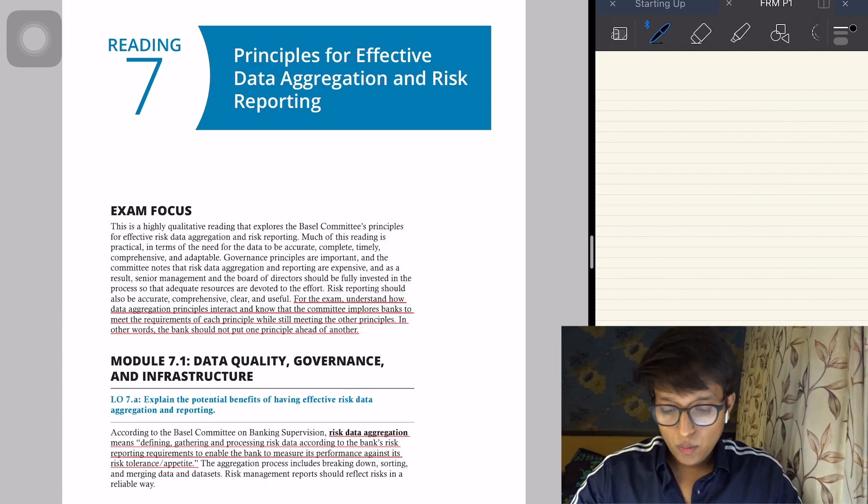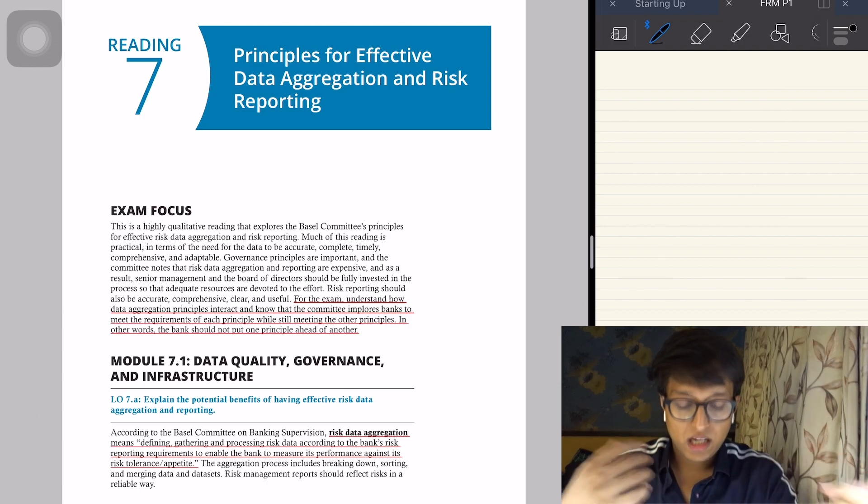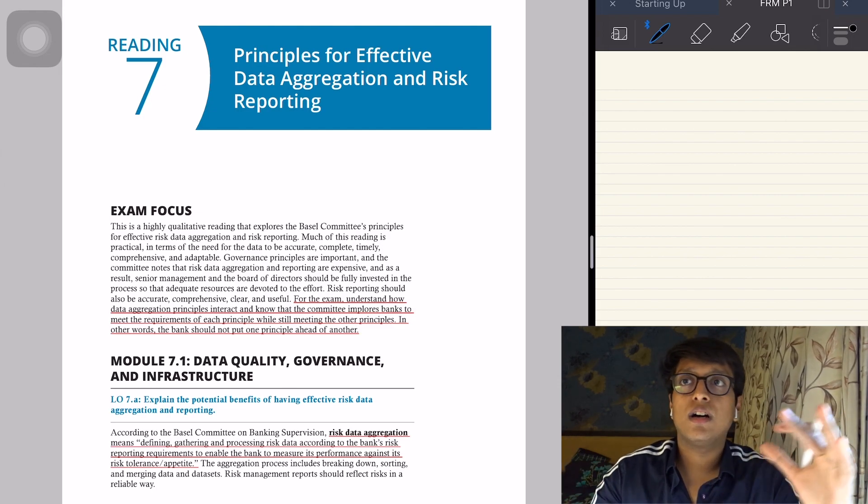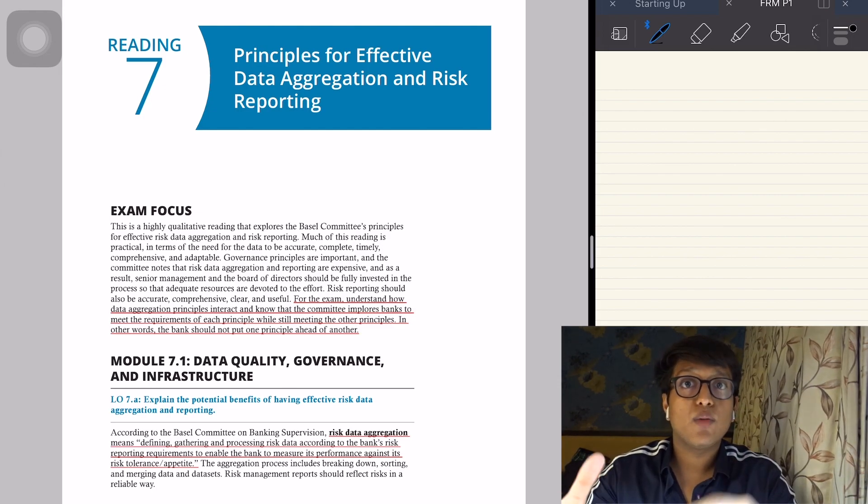So now we do the seventh reading, which is the principles for effective data aggregation and risk reporting. It's very theoretical but fairly qualitative.